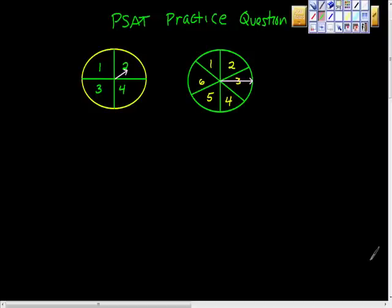So today we're going to do a PSAT practice question number 15. It gives us two spinners: one, two, three, four, and then one, two, three, four, five, six.